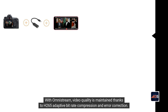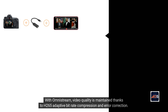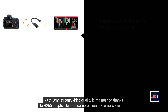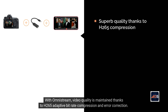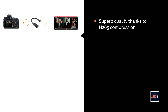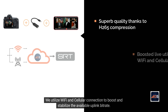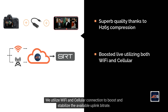With Omni Stream, video quality is maintained thanks to H.265 adaptive bitrate compression and error correction. We utilize Wi-Fi and cellular connection to boost and stabilize the available uplink bitrate.